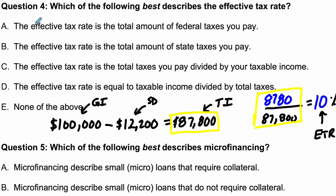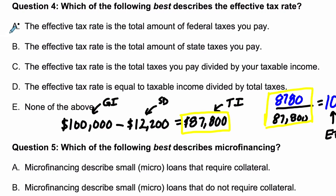So these answer choices: it's not the total amount of federal taxes you pay — that's not it. It's not the total amount of state taxes you pay — not it. The correct answer is the total taxes you pay divided by your taxable income. That's what we have right here. All right, hope that helped.